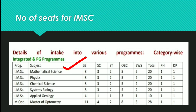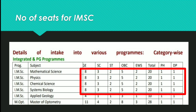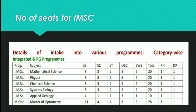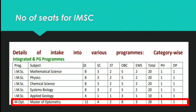For Mathematical Sciences: General 8, SC 3, ST 2, OBC 5, EWS 2, Total 20, with PH 1 and Defense 1. For Physics, Chemical Science, and Systems Biology, the same seat matrix is followed. For Applied Geology: General 4, SC 1, ST 1, OBC 3, EWS 1, Total 10, PH 1, Defense 1. For Masters of Optometry: General 11, SC 4, ST 2, OBC 8, EWS 3, Total 28, PH 1, Defense 1.